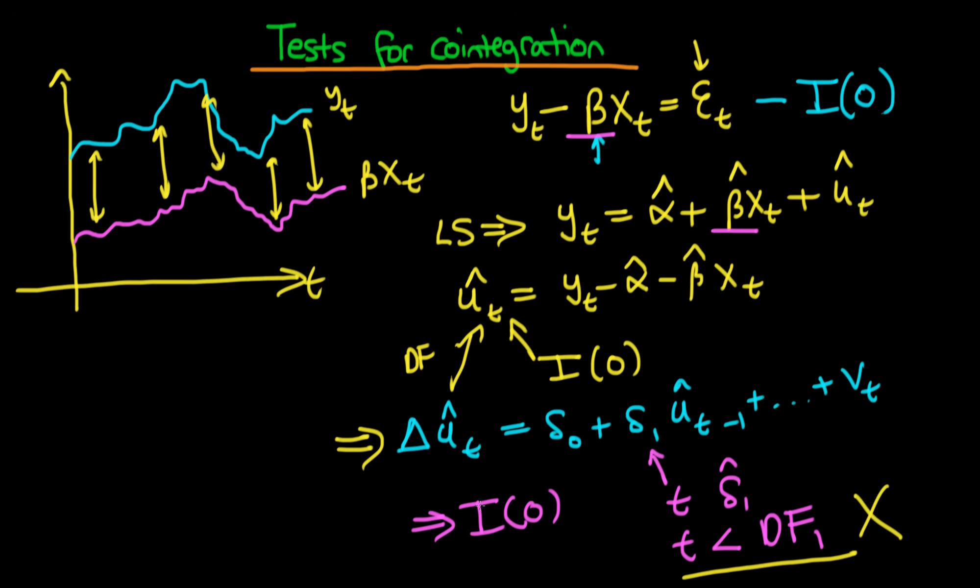And essentially we keep everything the same. We carry out this least squares regression as we would before. We carry out this particular test or the functional form of this test is exactly the same. The only thing that needs to change is the particular comparison of the t with the Dickey-Fuller distribution. It turns out that we can actually amend the Dickey-Fuller distribution to take into account the fact that we are estimating beta.